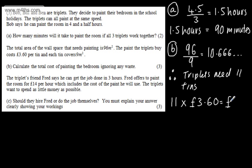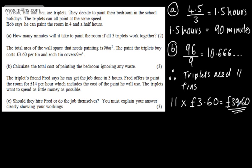So we've got £39.60. We've shown that we needed 11 tins, so the total cost is £39.60. We get one mark for showing this calculation, one mark for stating they need 11 tins, and one mark for the final calculation.